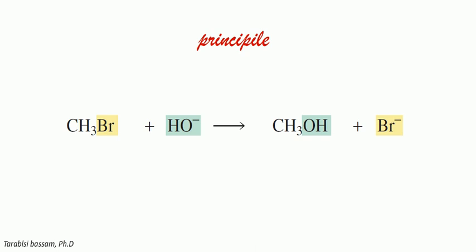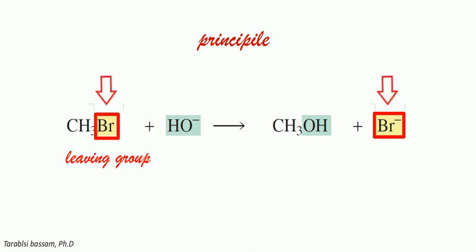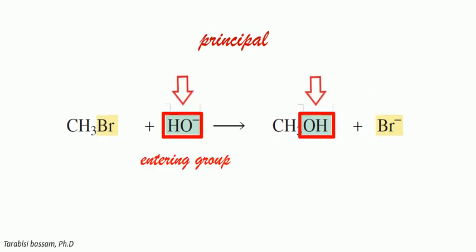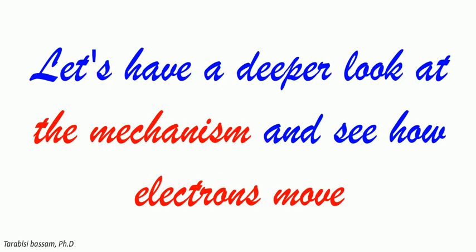The principle is very simple. The bromine in the methyl bromide, which is called the leaving group, will be replaced by the hydroxide, which is called the entering group. So we obtain alcohol from methyl bromide.